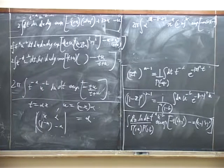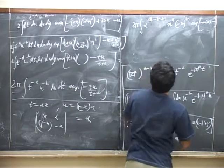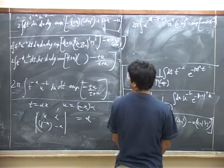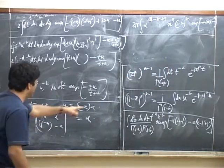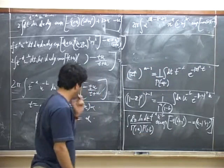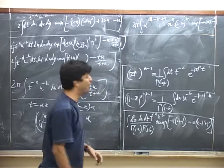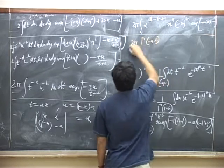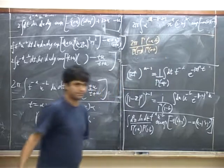So we can rewrite this expression as 2 pi, then the integral over alpha gives us gamma of minus a minus b plus 1. We've lost 1 over gamma factors — let's put them back in. So we have 2 pi times gamma of minus a minus b over gamma of 1 minus a times gamma of 1 minus b, times the factor of x into 1 minus x from power counting, times the integral dx x to the power minus b plus 2, 1 minus x to the power minus a plus 2.